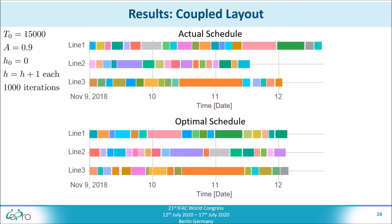On the top side, you can see a schedule provided by the plant's schedulers, and on the bottom side, you can see a schedule produced by our scheduling algorithm. You can see that our scheduling algorithm improves the makespan of the schedule compared to the actual schedule.